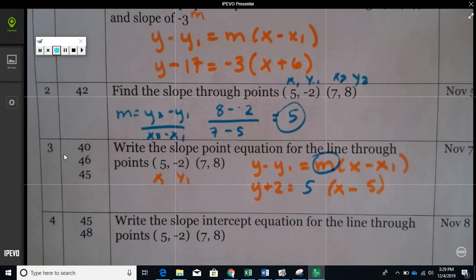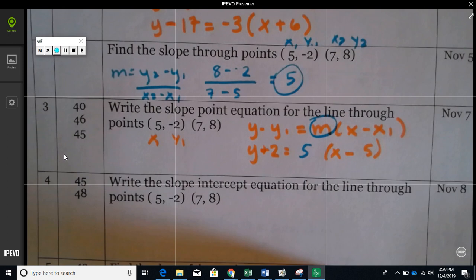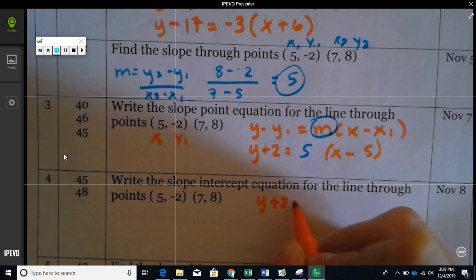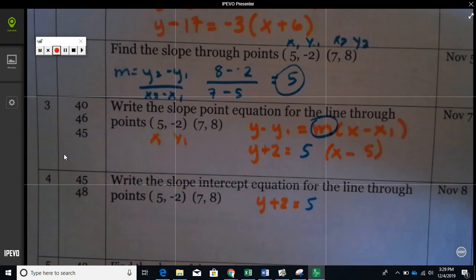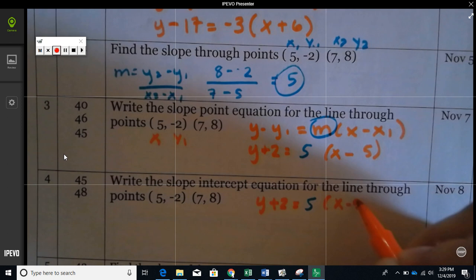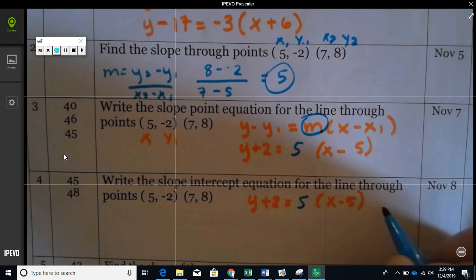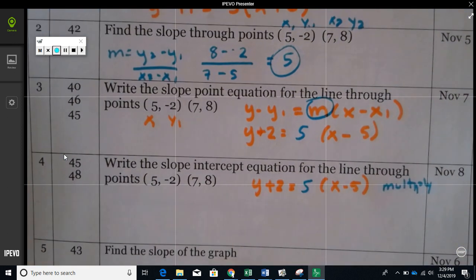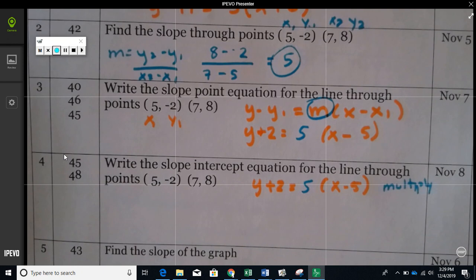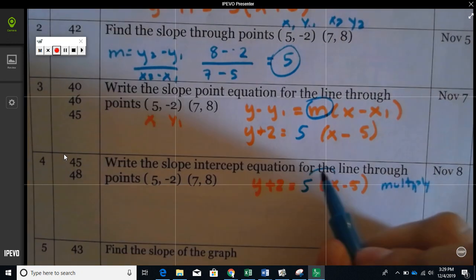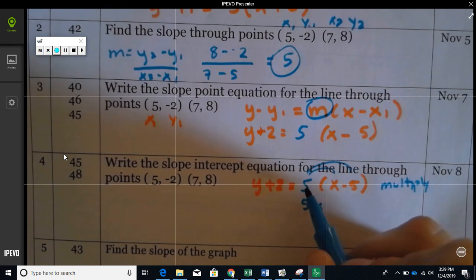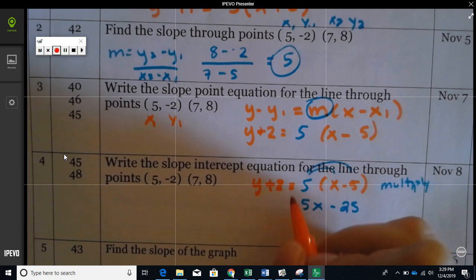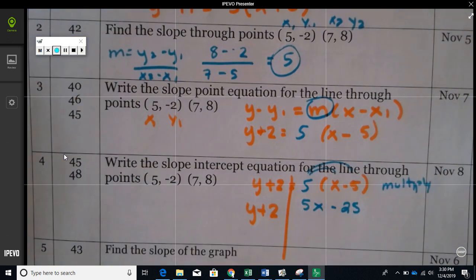On number 4, you have to solve this. We're taking this equation here and basically solving it. I write it again. The first step is to distribute this 5 in front. By distribute, I mean you're going to multiply times everything inside. Try it, then pause the video, press play. Did you get it right? 5 times x is 5x, 5 times negative 5 is negative 25, so then I bring this down, y plus 2.